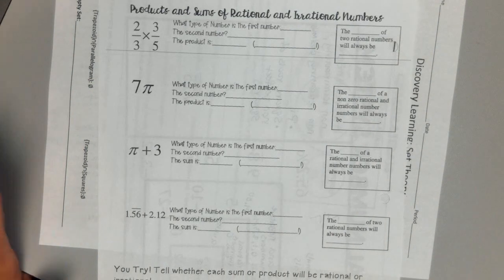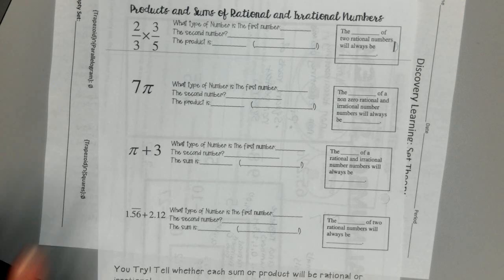Alright, this is just sums and products of rational and irrational numbers. It's going to be a lot of words, but basically, if any part of your problem is irrational, then your answer will be irrational.